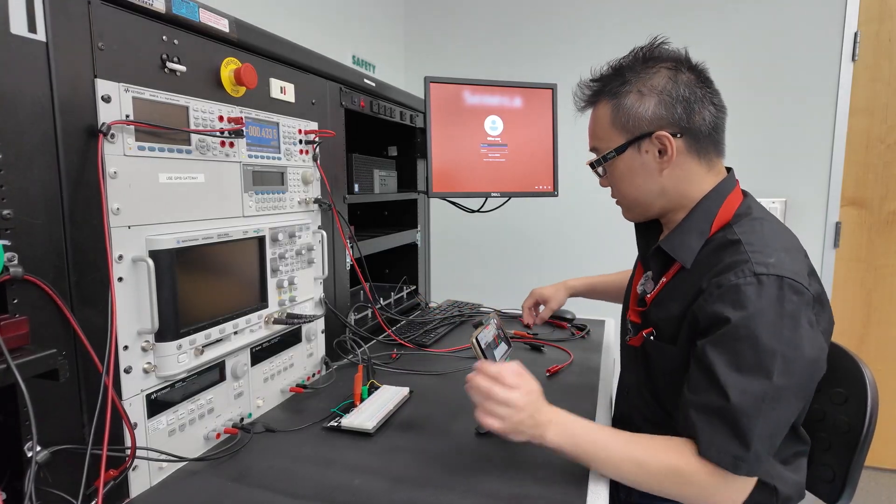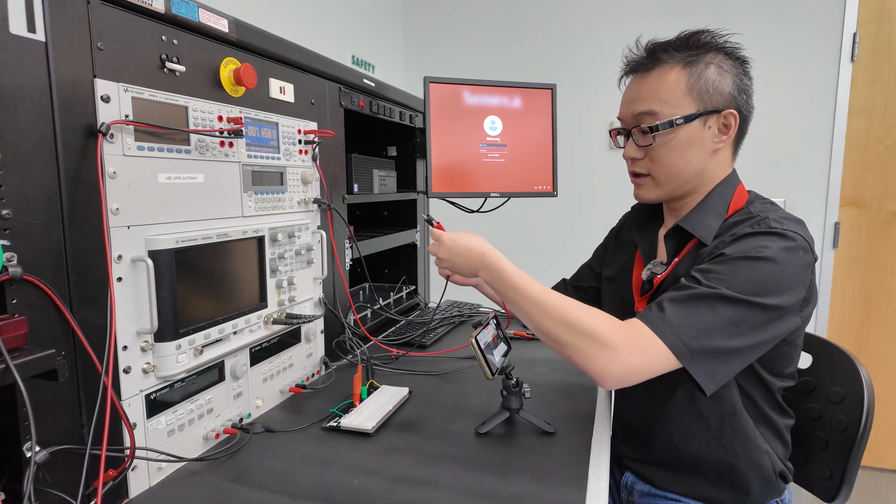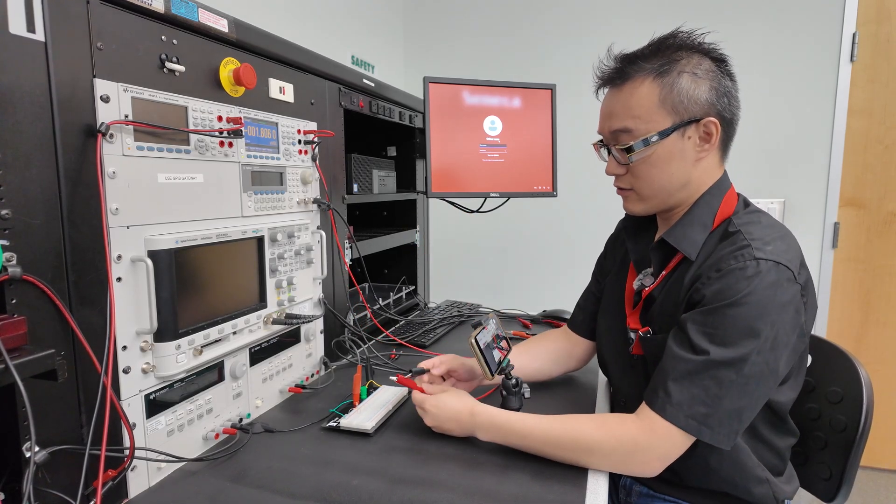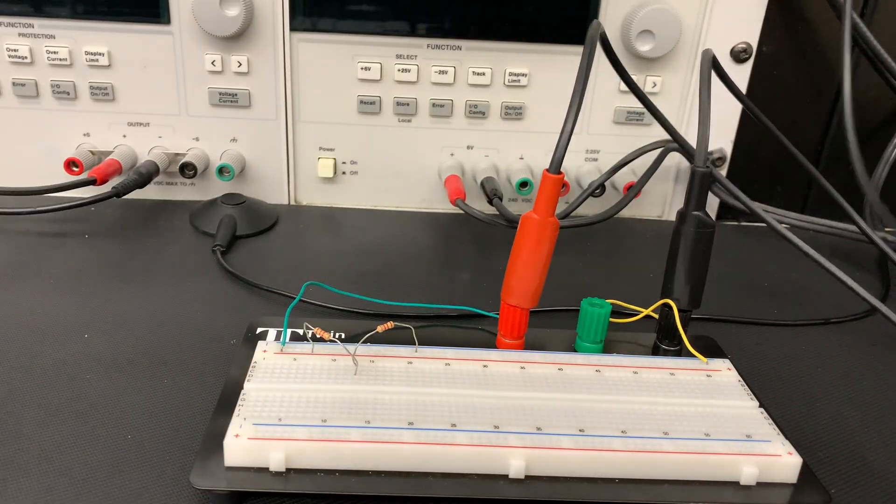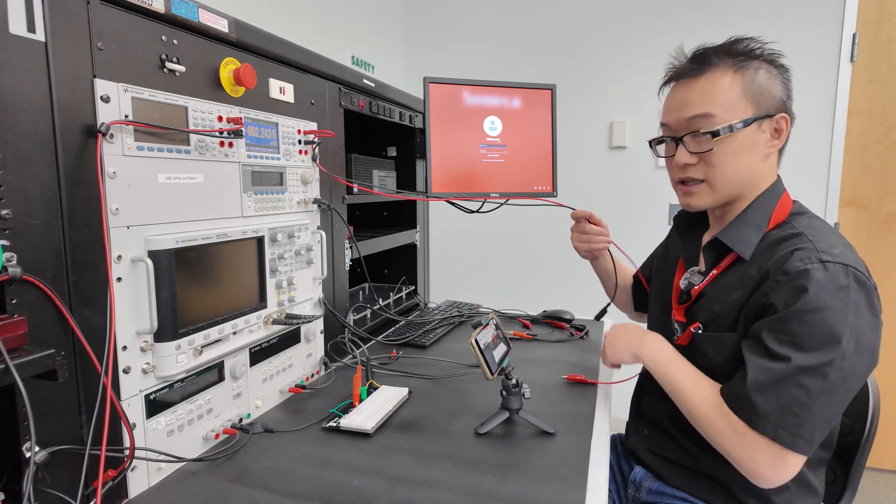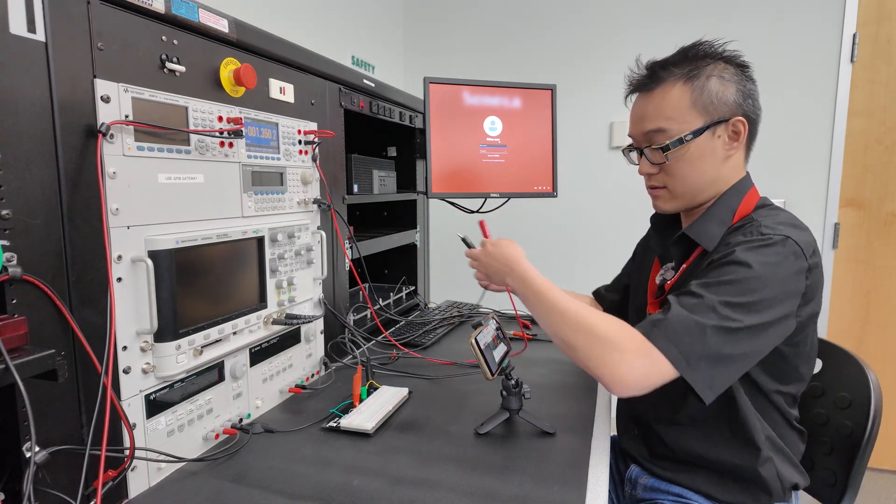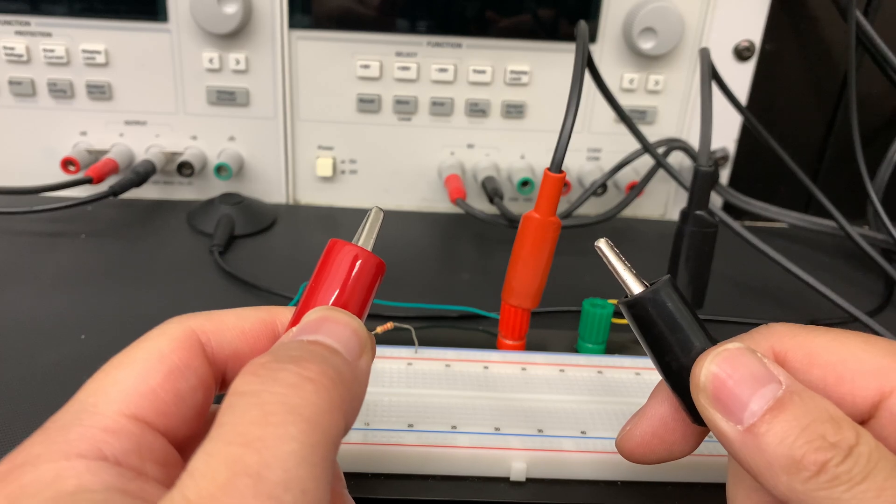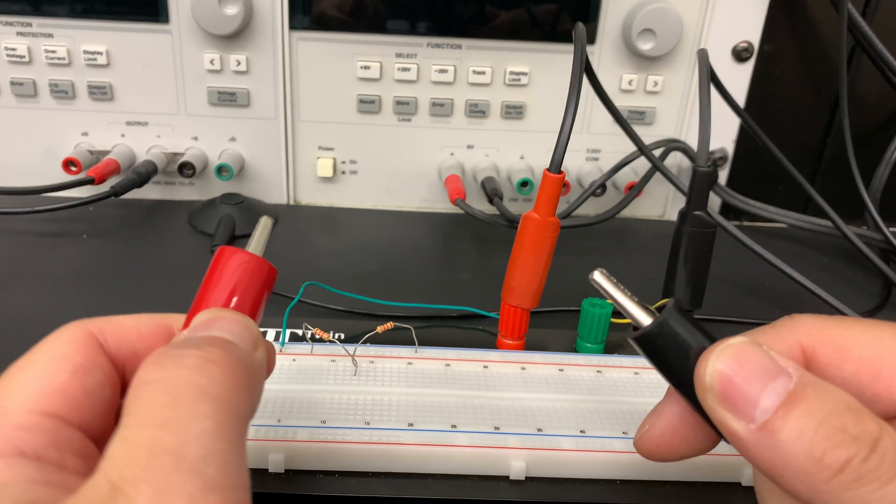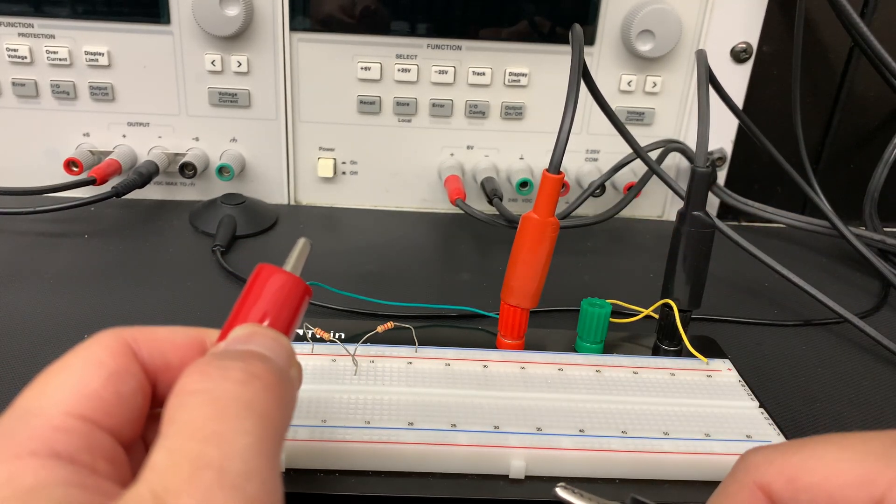Now we're going to take the alligator clip that we have connected to the multimeter. Let me follow this and make sure that this is the alligator clip with the multimeter. We're going to connect the two alligator clips to various points on the circuit.